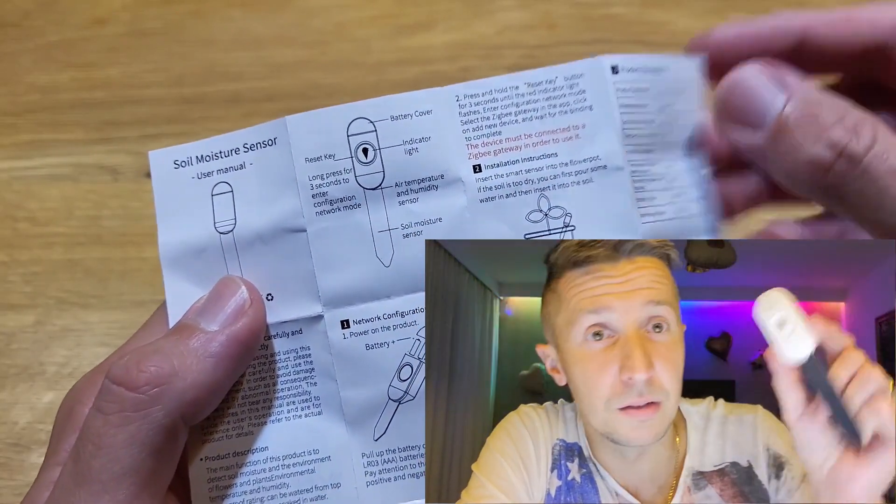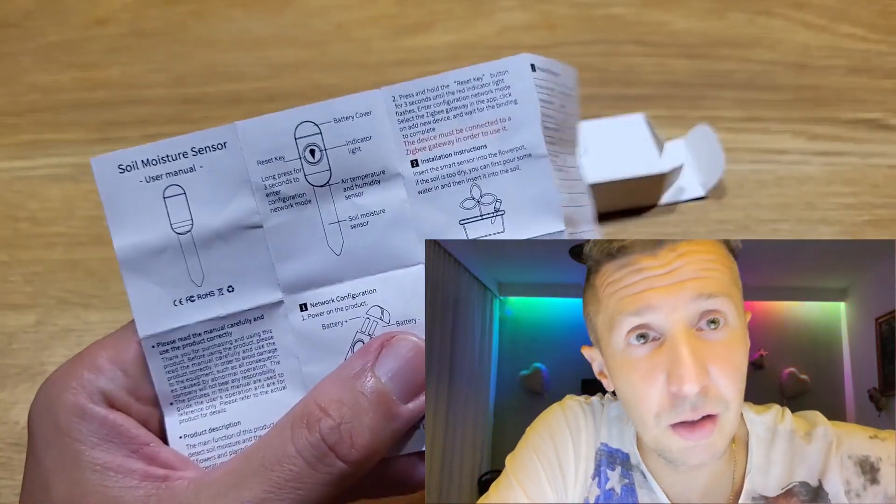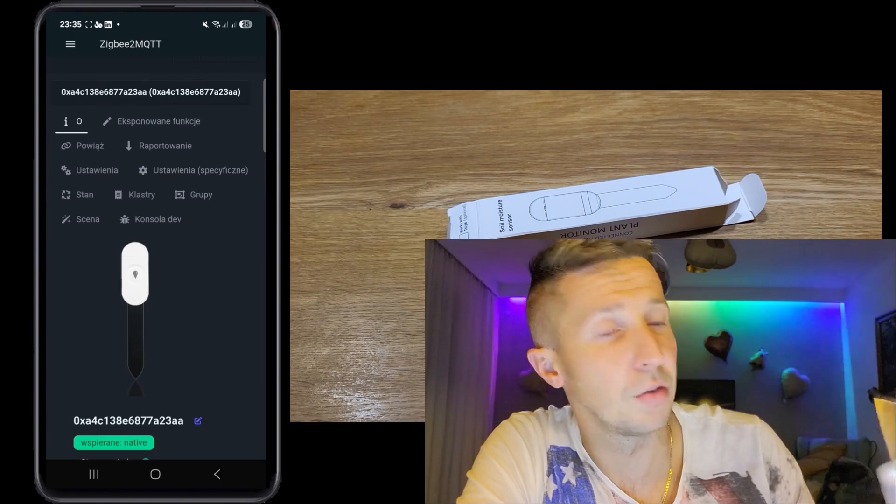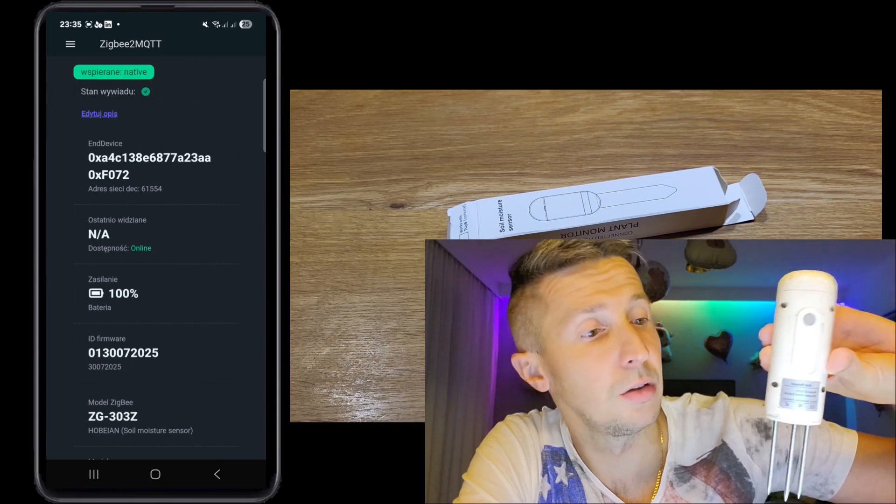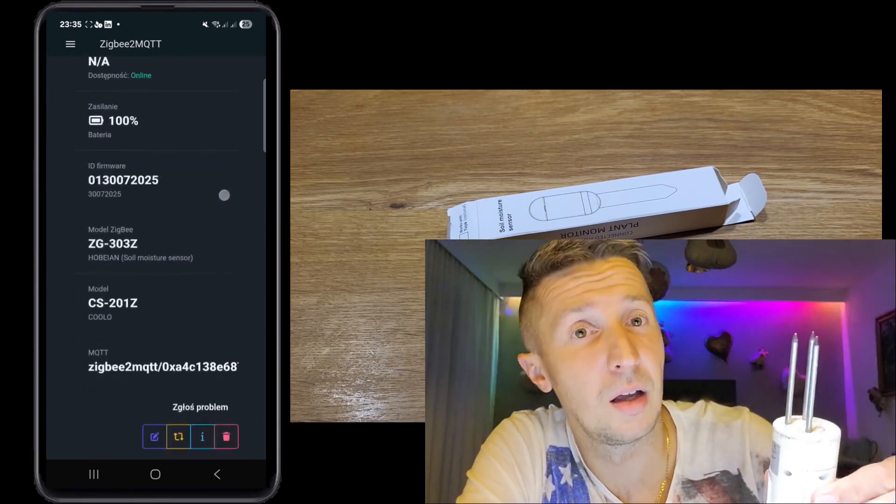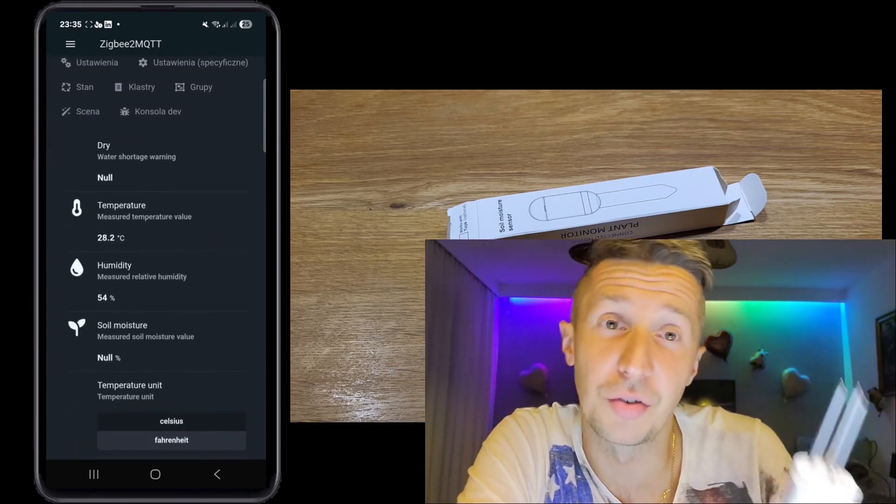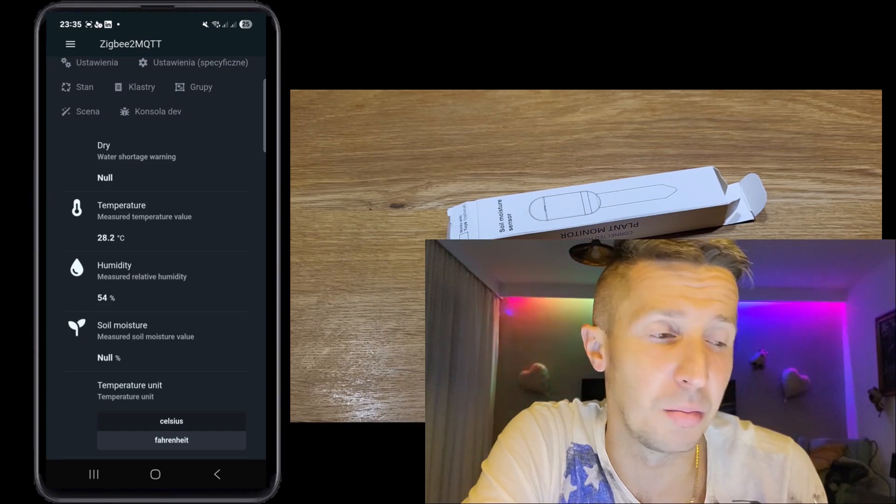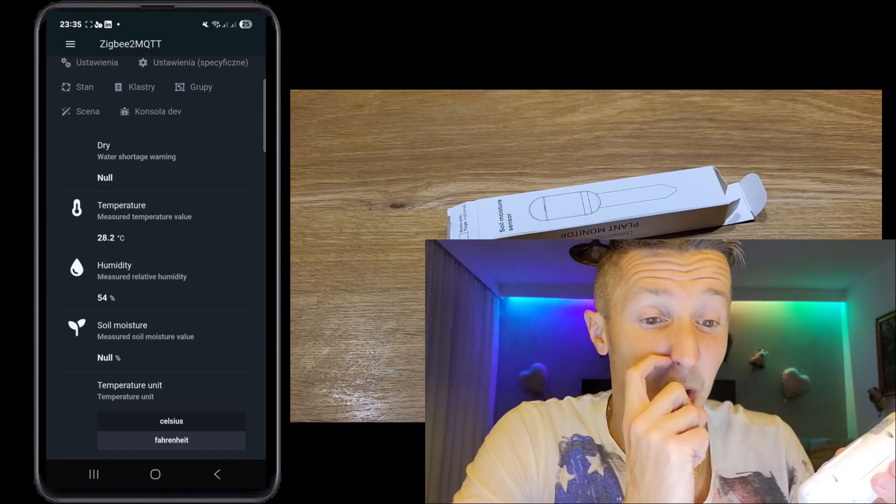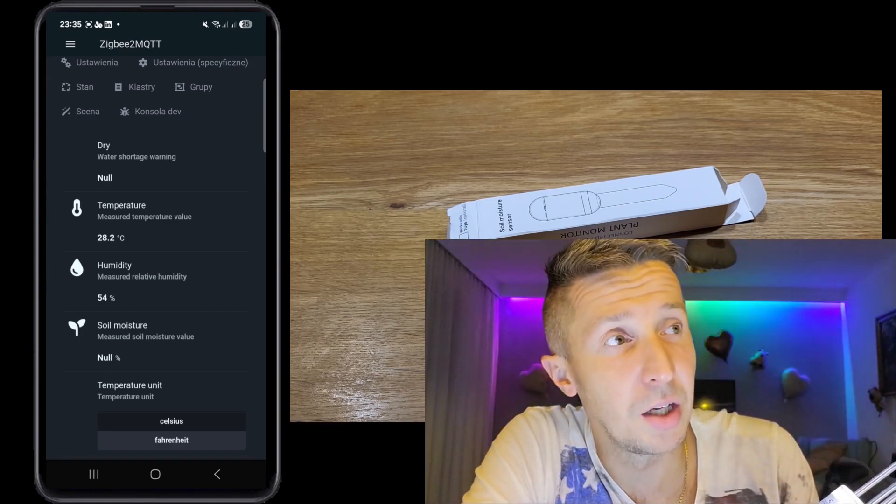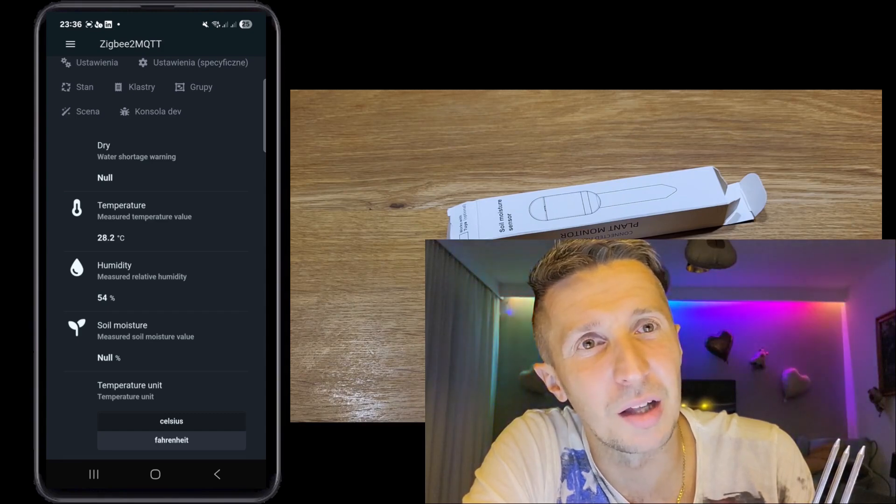You can find on my channel that I was testing also this device - a very big soil moisture sensor. I think I had it for the second season, and unfortunately it also doesn't work quite well now. It was also in the pot but it was showing some wrong numbers. I think when I was reviewing this product, it was quite good and the readings were correct. But now it seems that it doesn't work as it should.